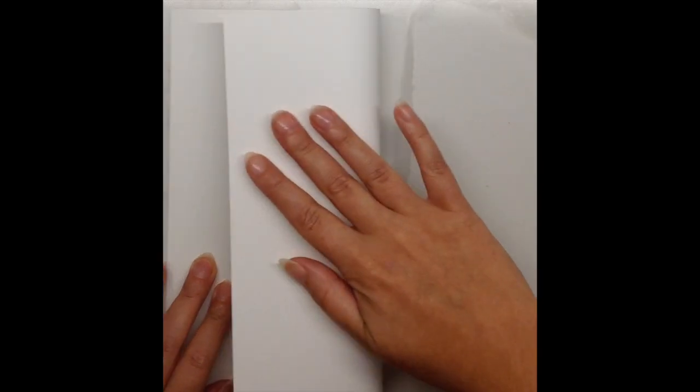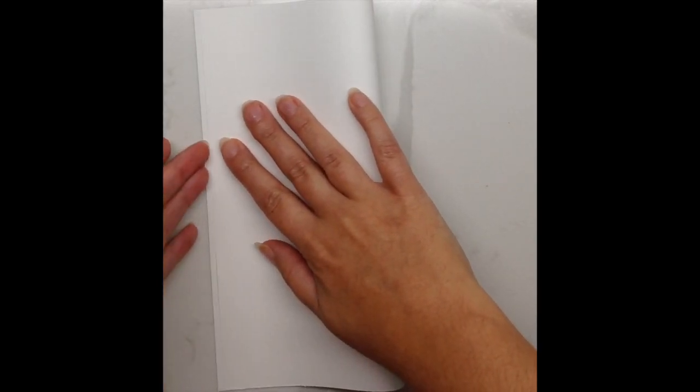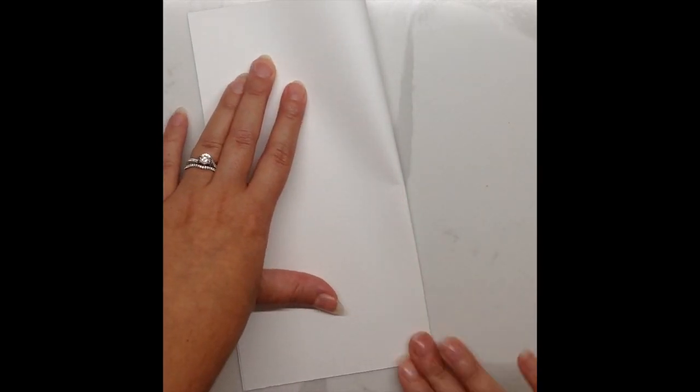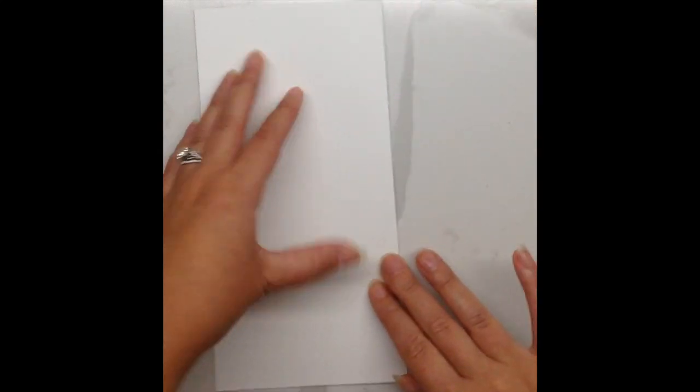To start, we need to fold our paper in half. Line up your edges and your corners and then crease the middle of your paper.